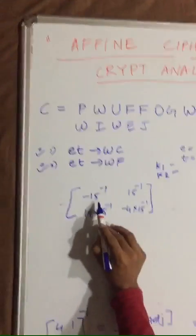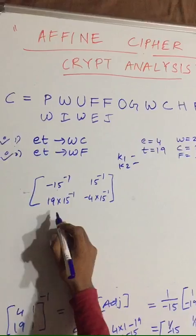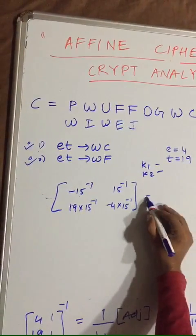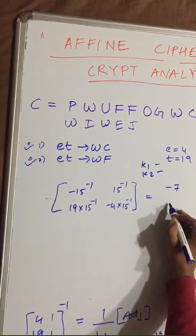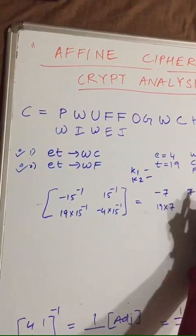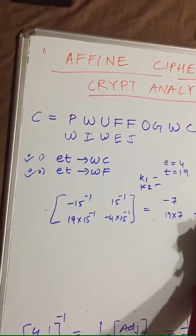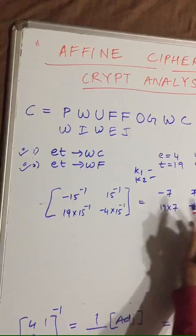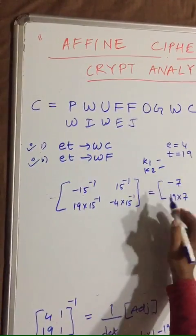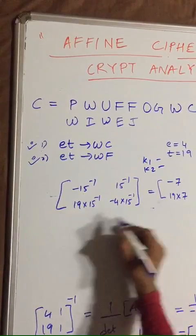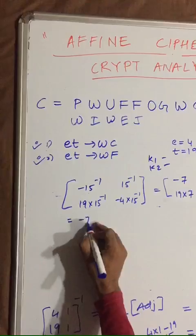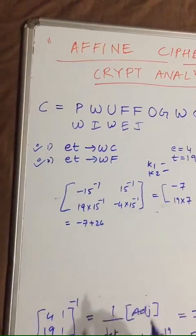Since the key domain is 26, the multiplicative inverse of 15 mod 26 equals 7. Please refer to our earlier lecture if you haven't seen this. So the matrix becomes: −7 (which is −7 + 26 mod 26), 19·7, 7, and −4·7.